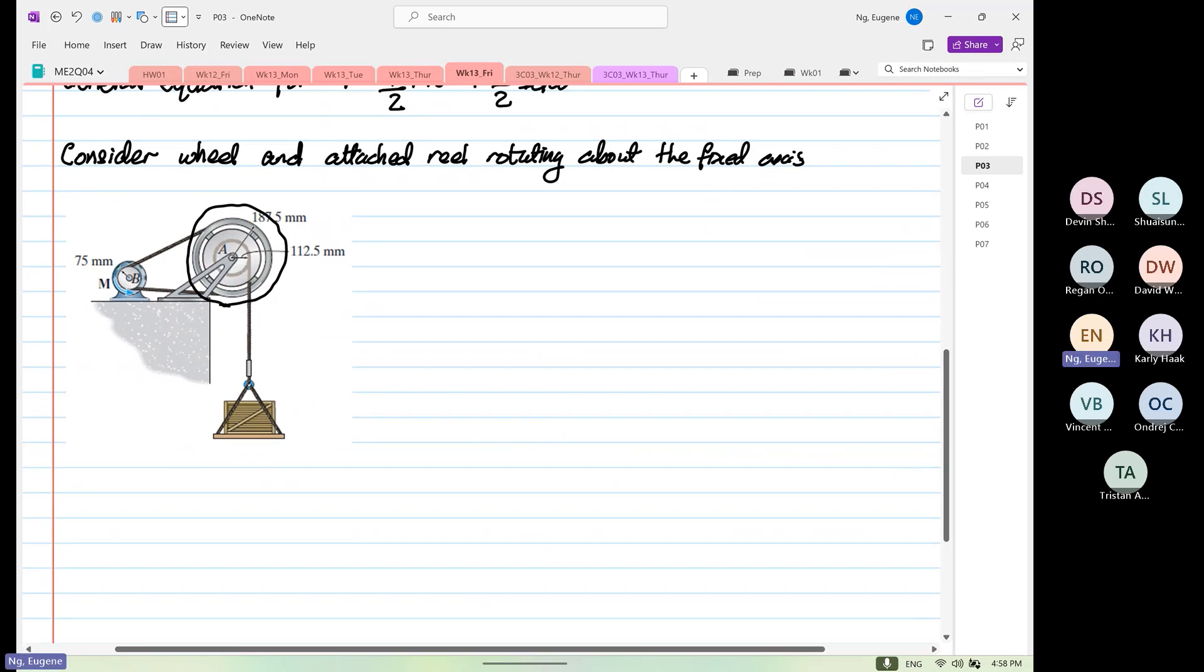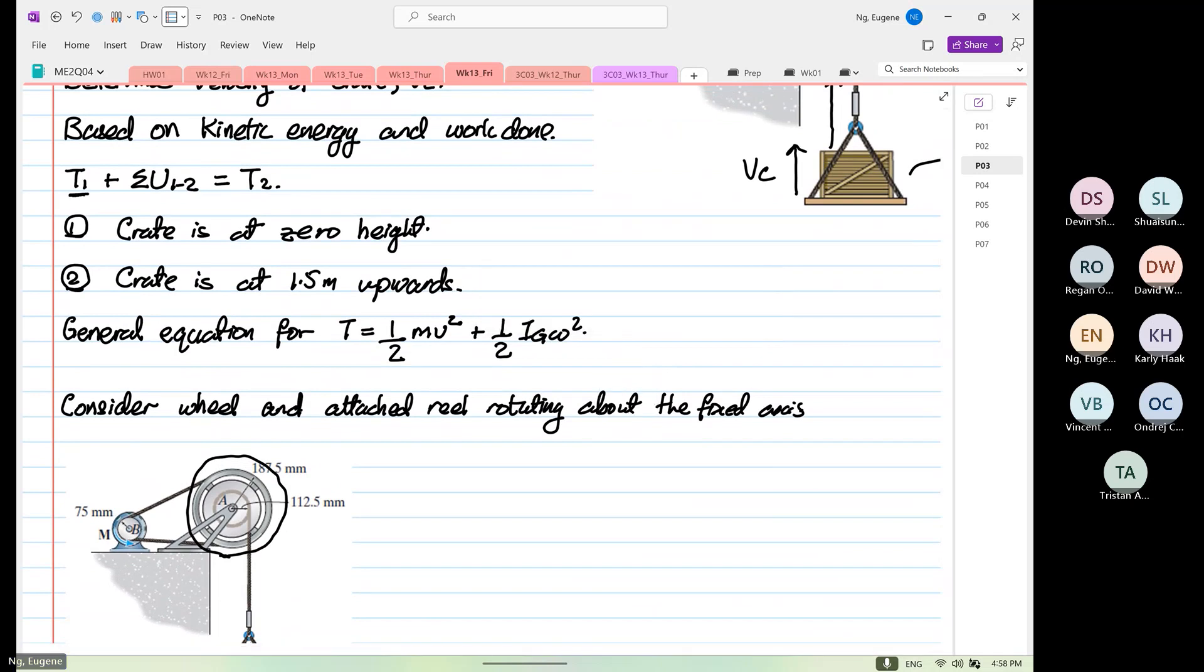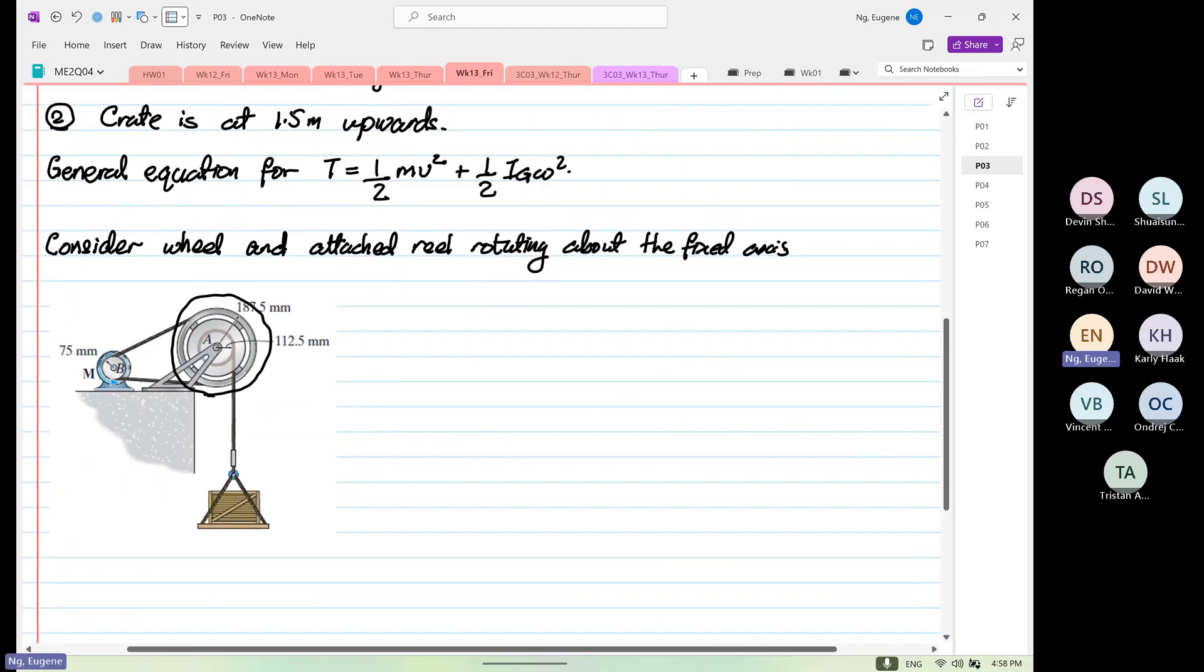So before we go on, we declare. At T1, zero height, no pump is applied. So therefore T1 is equal to zero. Nothing is moving. The thing has not. So we know that T1 is equal to zero. So whatever we calculate now is going to be for T2.